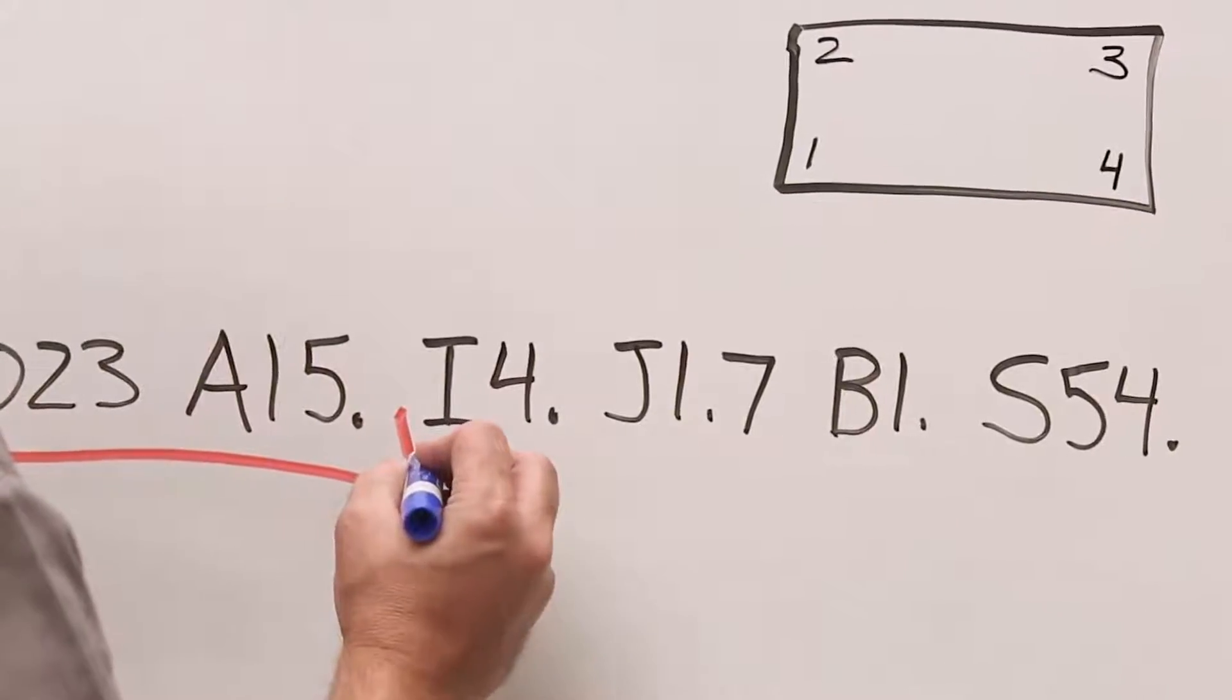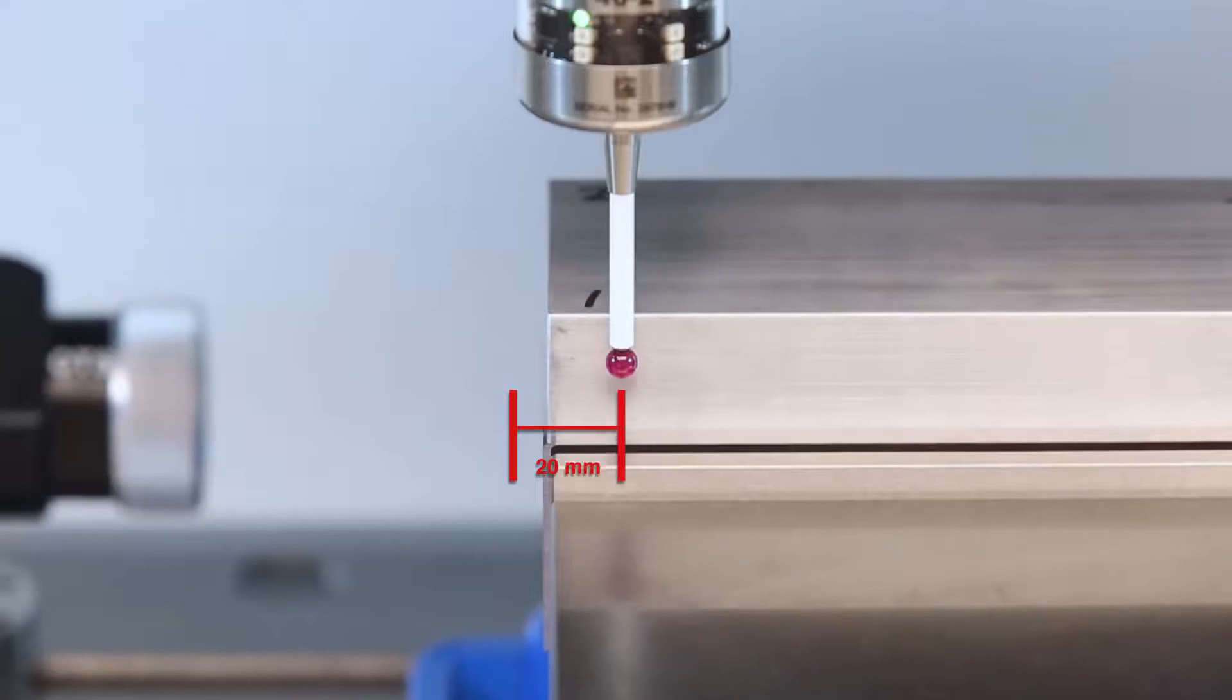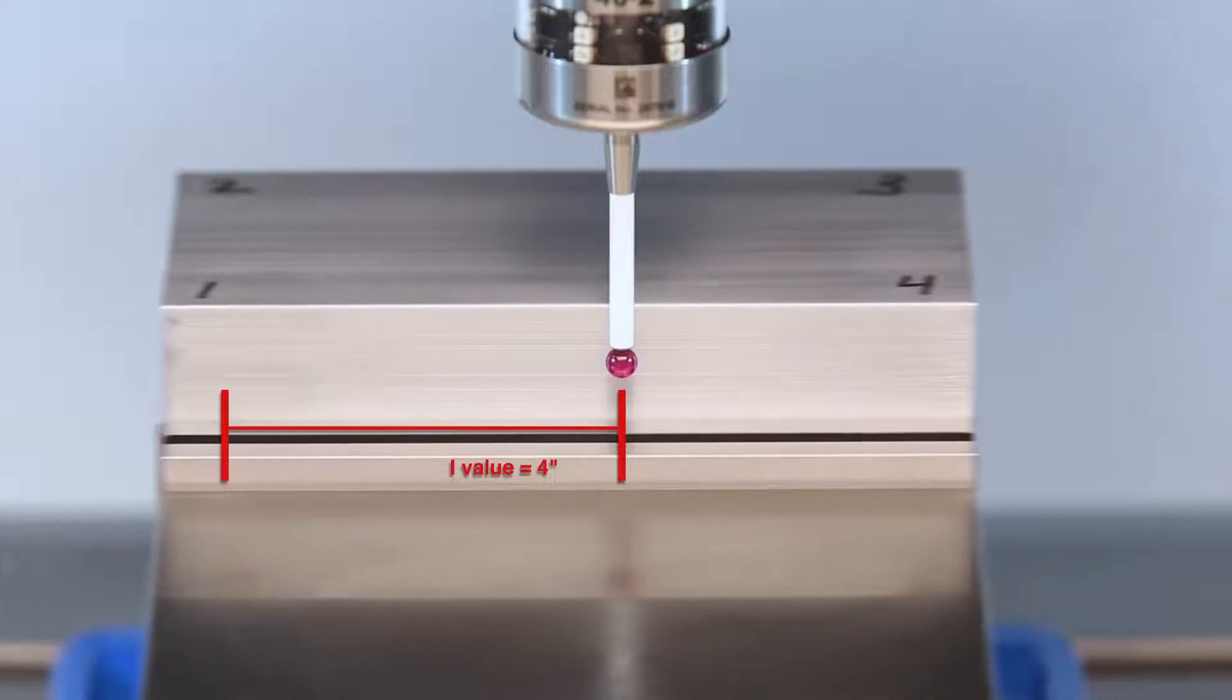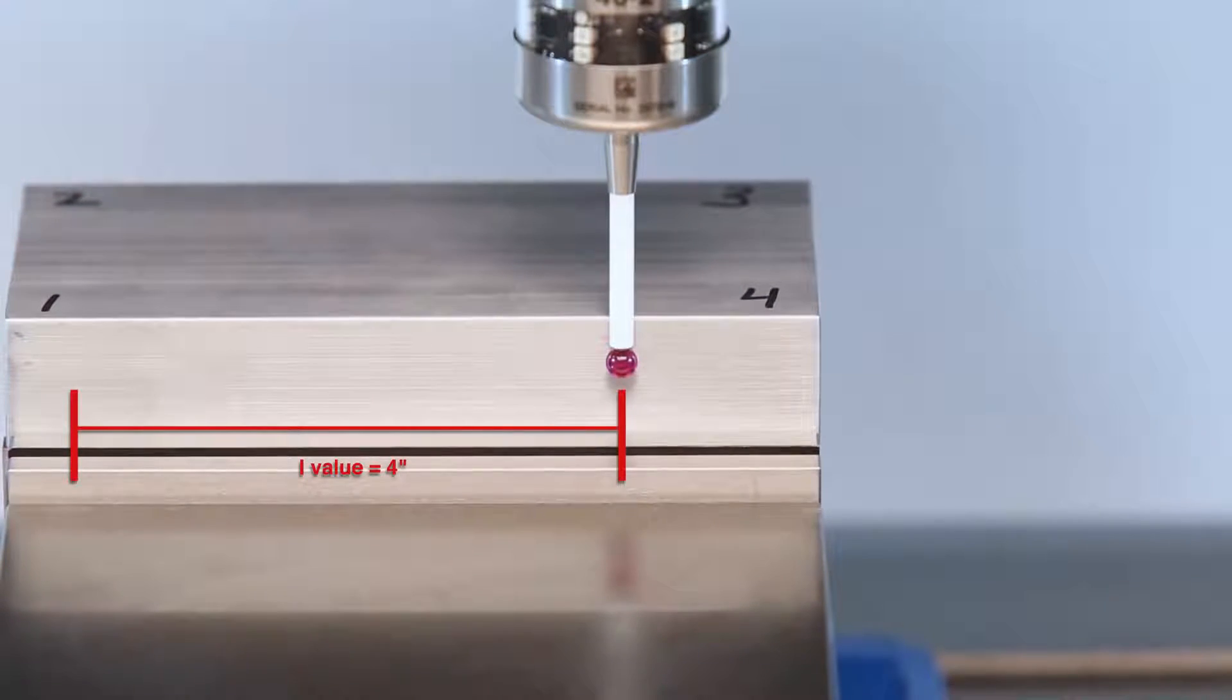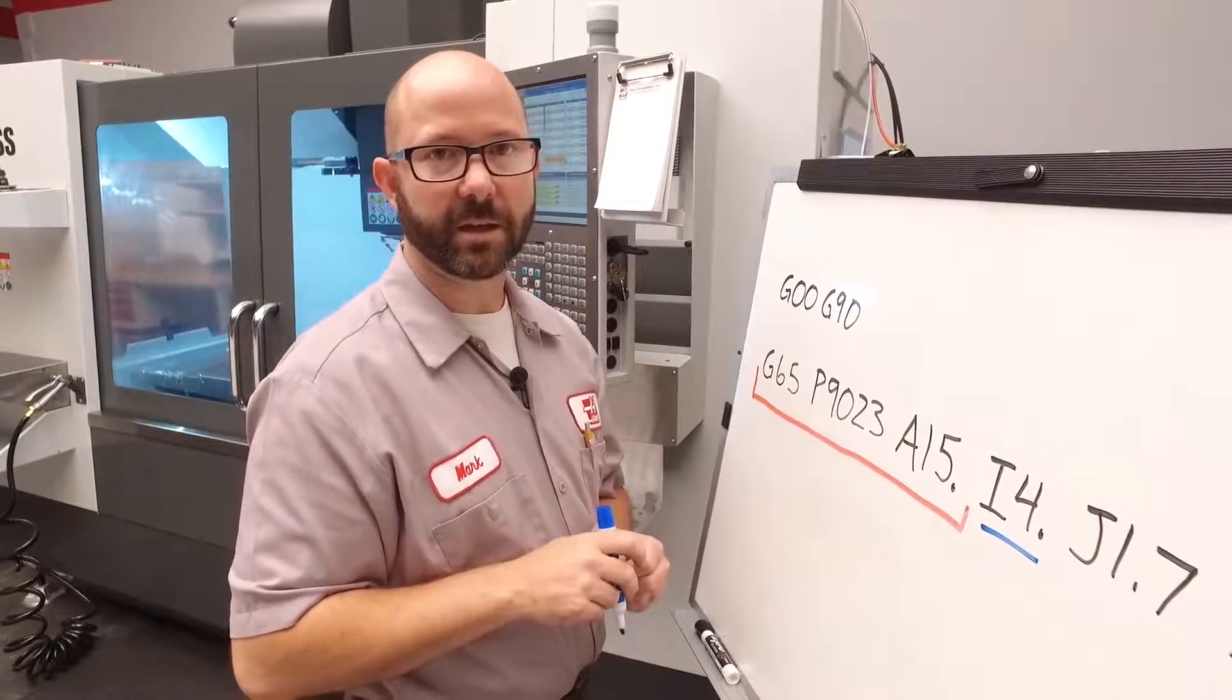Next, we're gonna enter an I value. This is the distance along the X-axis between our probe points. That probe is gonna move 20 millimeters, take one probe hit, then it's gonna move over by our I value. In this case, I four inches before it makes that second hit point.